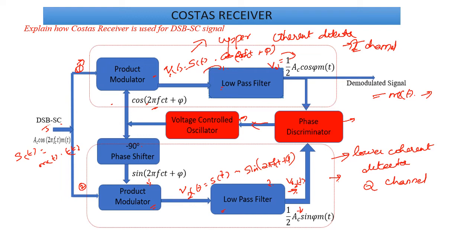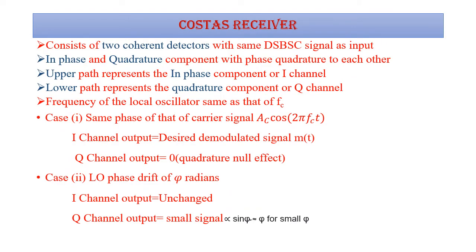Moving to the next slide: as mentioned before, it consists of two coherent detectors with the same DSB-SC signal as input. The two parts are the in-phase component and the quadrature component, which are in phase quadrature to each other. The upper path represents the in-phase component or I channel, and the lower path represents the quadrature component or Q channel. The frequency of the local oscillator is the same as that of your carrier frequency f_c.